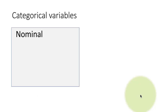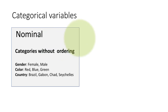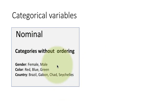So let's look at categorical variables. When you have variables, you have things called nominal variables, which means you're just assigning names to objects — categorical categories without any ordering. For example, gender is female or male. There's nothing to say one is greater than the other. They're just two different categories with no ordering between them.